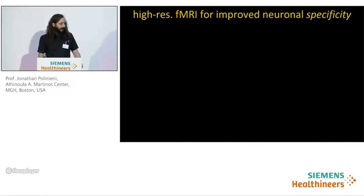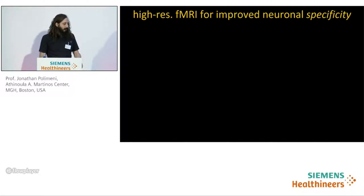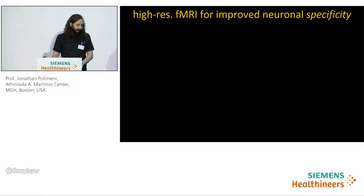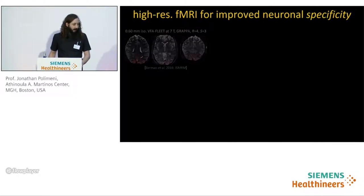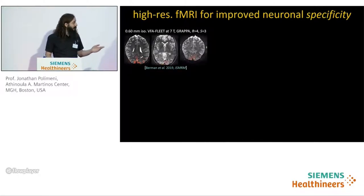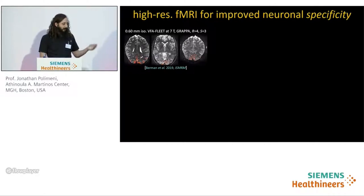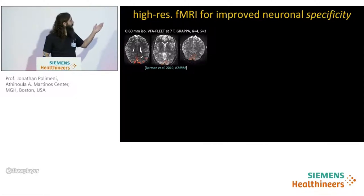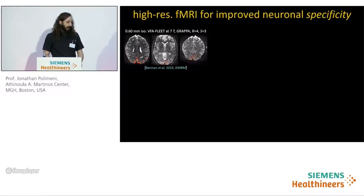Most of the work in our group falls under the general theme of developing high spatiotemporal resolution fMRI for improving neuronal specificity. Along these lines, we recently presented at the Dubrovnik Ultra Highfield workshop a new method for whole field of view high resolution BOLD at 7 Tesla known as VFA FLEET. Here's an example of some 0.6 millimeter isotropic fMRI that we're using now to sample fine-scale structures in the human brain.